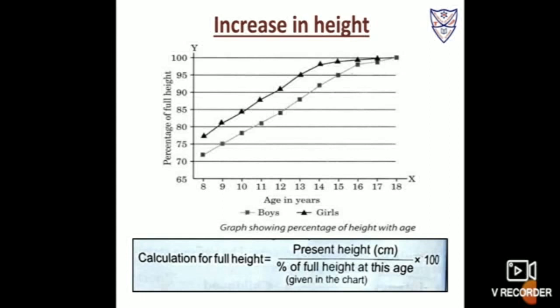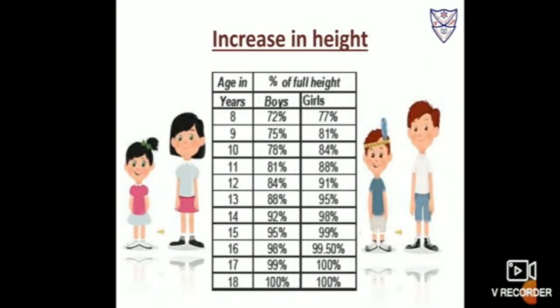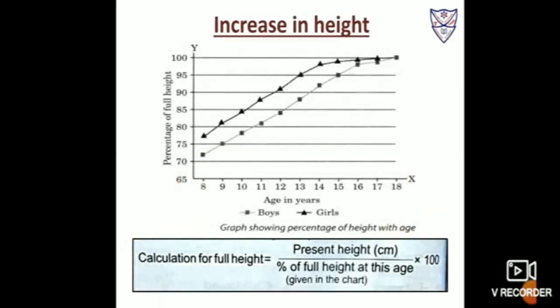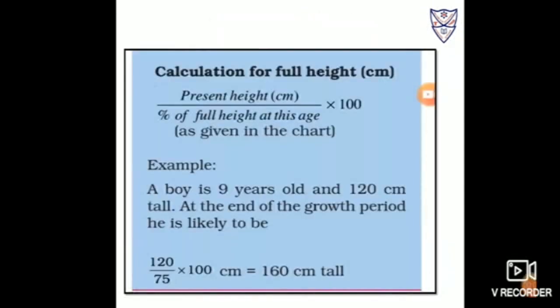In order to calculate the full height, a formula is given: present height in centimeters, divided by the percentage of full height at that age as given in the chart, multiplied by 100.